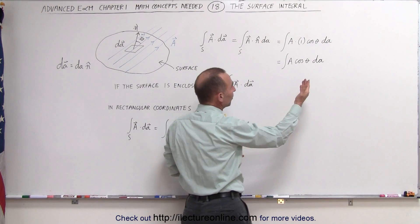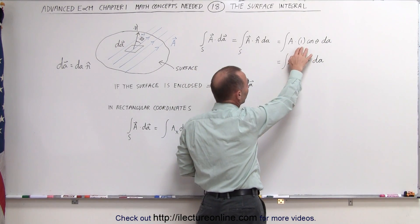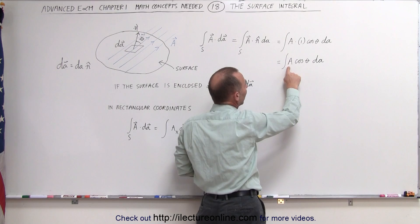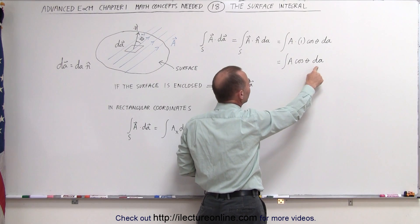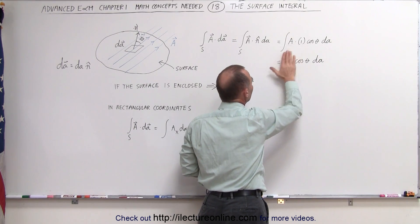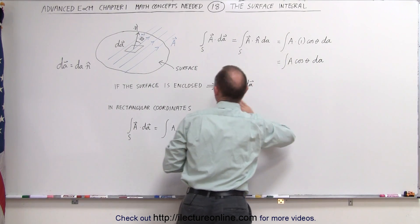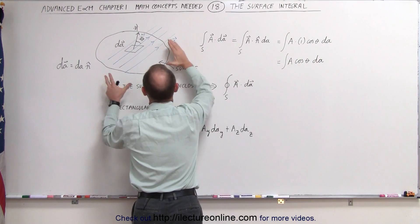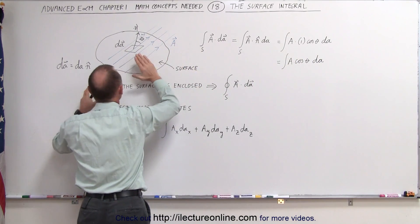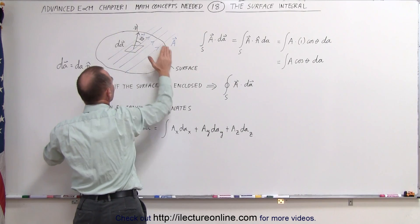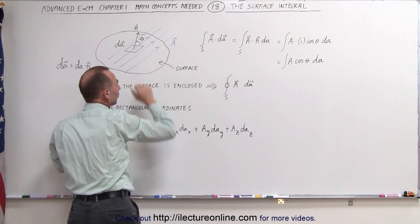We can simplify that to A cosine theta dA. That would then be an integral, and we would have to integrate that with limits such that we cover the entire surface.